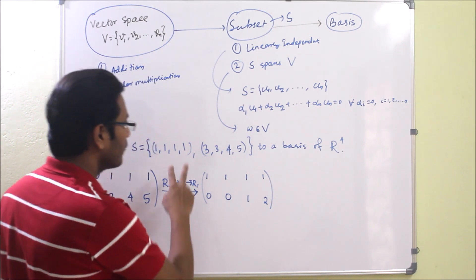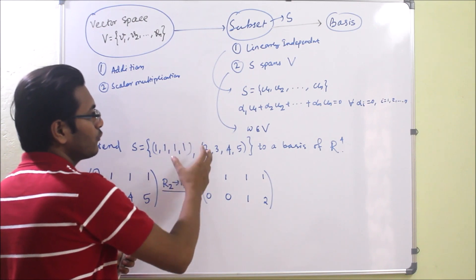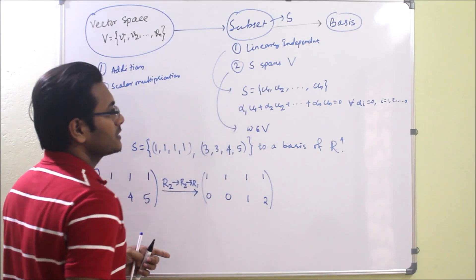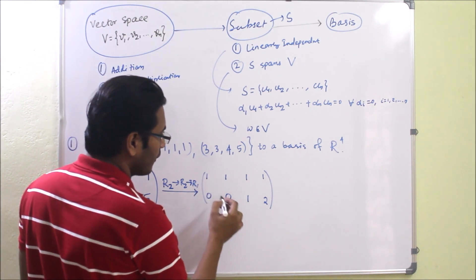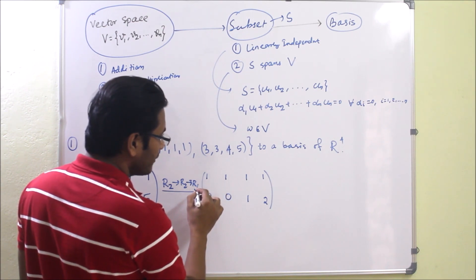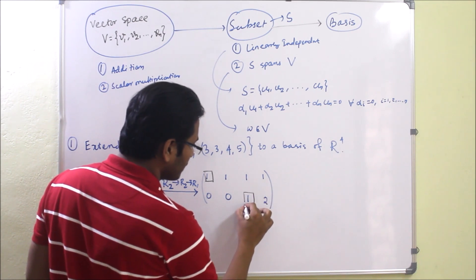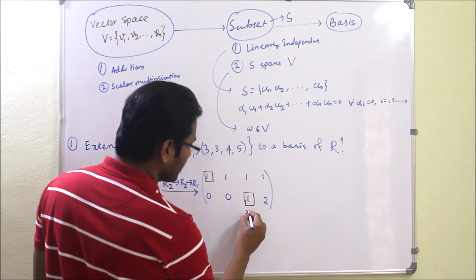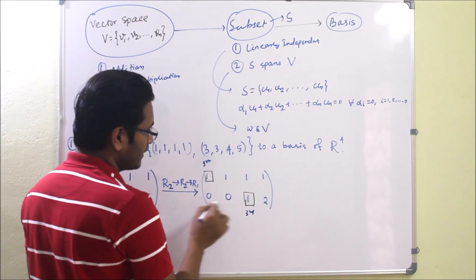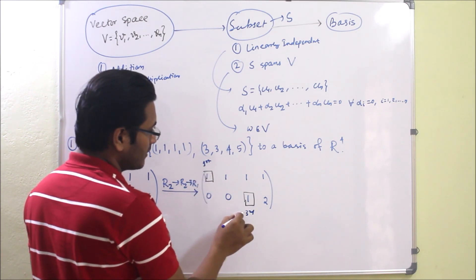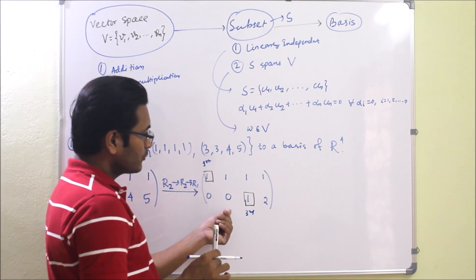Now we have to decide what the two additional vectors should be so that the new set forms a basis of R4. We observe the final row echelon form and identify the pivot positions. The first row has a pivot at position 1 and the second row has a pivot at position 3. Since we have four positions, the remaining pivot positions are 2 and 4.